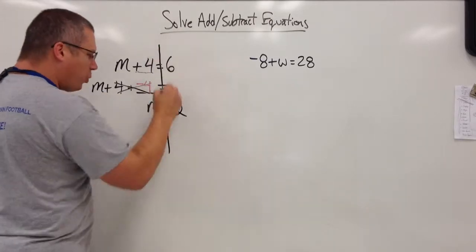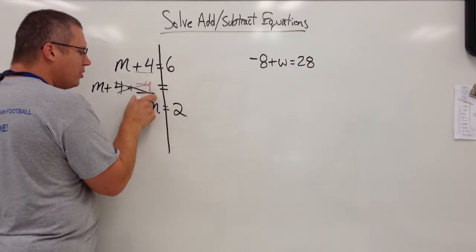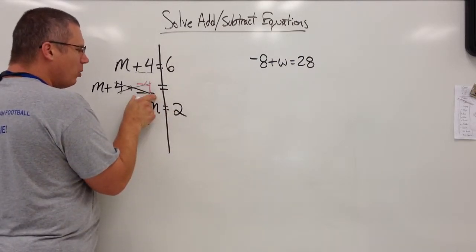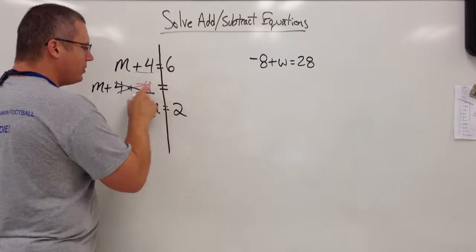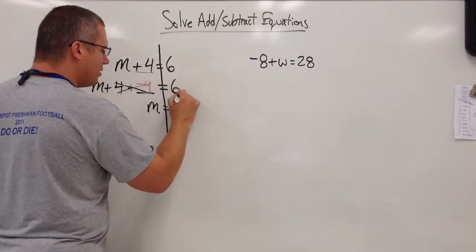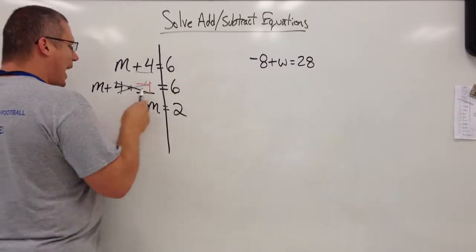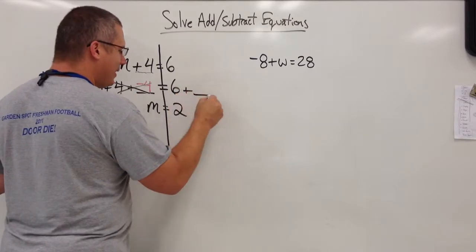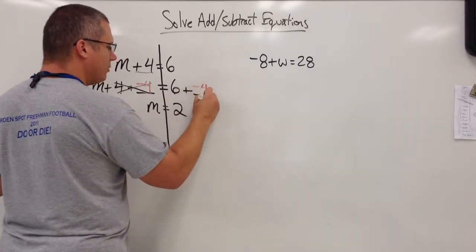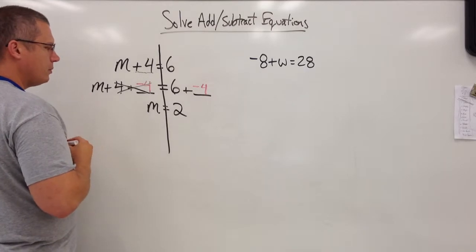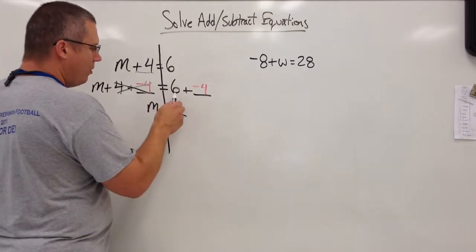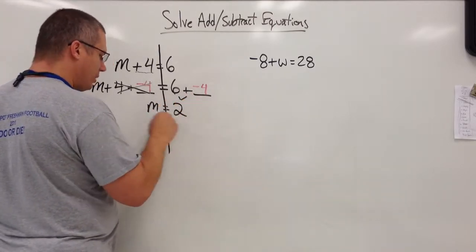Now in algebra, in equations, if you do something to one side, in order for it to be equal, you must do it to the other side. So this was a 6. I added negative 4 to the left. I must also add negative 4 to the right. And notice, 6 plus negative 4 is 2.